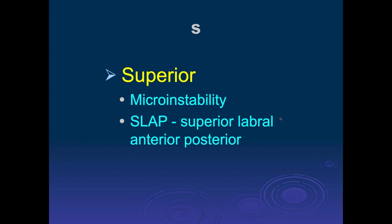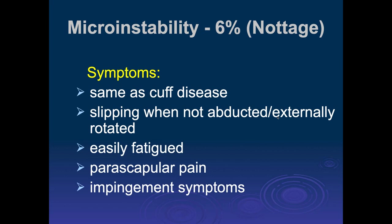Now let's talk about the superior area — what some people call micro-instability, where we get SLAP tears. The term micro-instability was coined by an Orange County orthopedic surgeon named Nottage, who claimed about 6% of significant shoulder instabilities are in this category of superior lesions. This was before SLAP tears became the rage about 12 to 15 years ago.